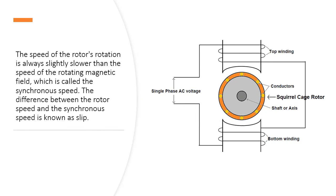The squirrel cage motor's rotation is always slightly slower than the speed of the rotating magnetic field, which is called the synchronous speed.